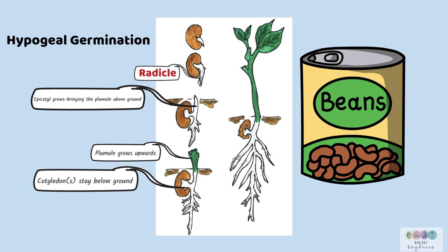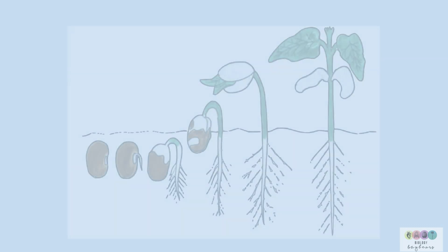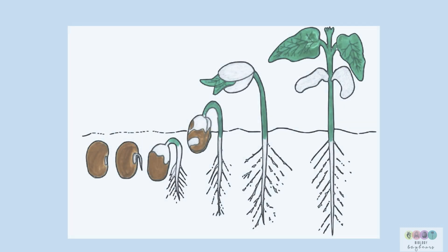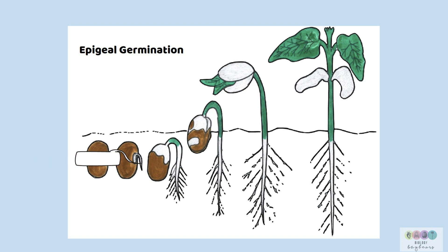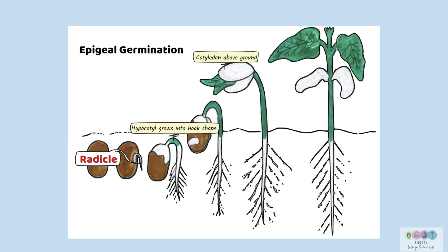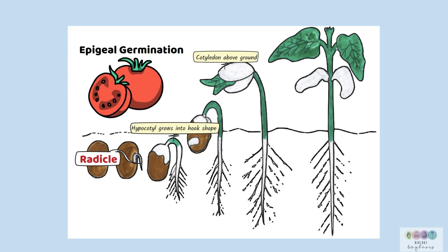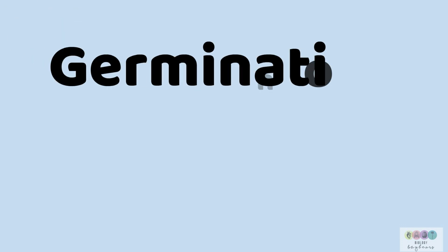In epigeal germination, E means 'emerge' — the cotyledons are going to emerge above ground. The first thing that always happens is that the radicle grows downwards. In this type, the hypocotyl grows into a hook and continues to grow, pulling the cotyledons above ground. The cotyledons can then turn green and photosynthesise. Tomato plants are examples of plants that undergo epigeal germination.